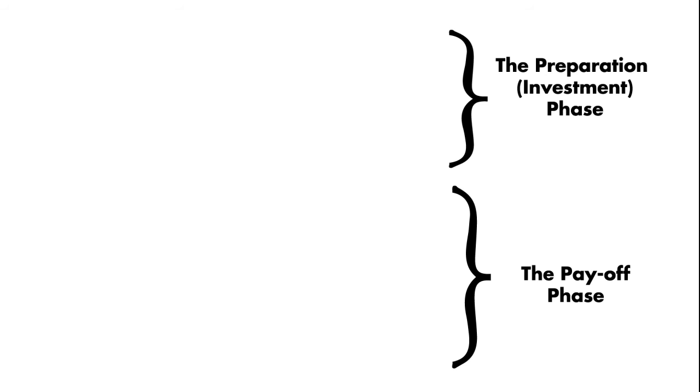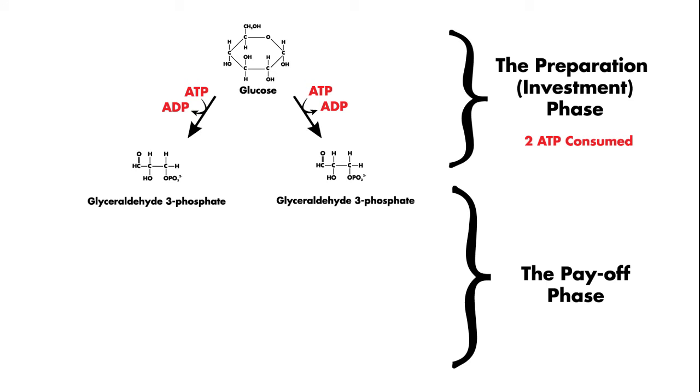In the preparation or investment phase, energy is used in the form of two ATP molecules to convert glucose into two 3-carbon molecules called glyceraldehyde-3-phosphate.